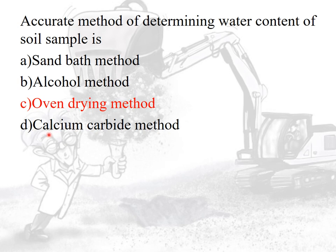If they ask what is the quickest method of determining the water content of a soil sample, the answer is calcium carbide method. In some questions, they may also ask in which degree Celsius the oven drying method is carried out — the answer is 105 degree Celsius.